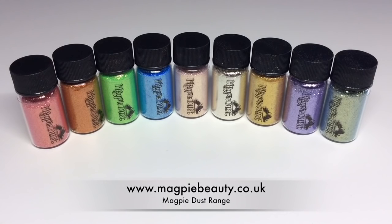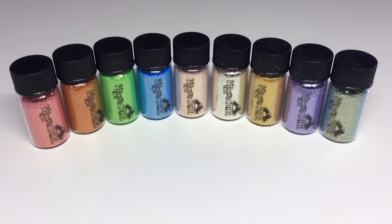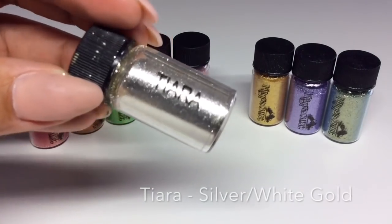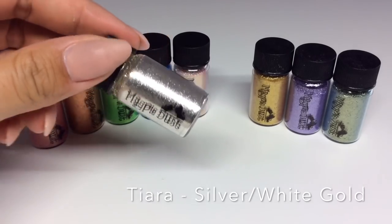Hey guys, welcome back to another video. Today I'm going to be doing some embossed metallic nails using the magpie dust range. I'm actually going to be using in particular tiara, which is a gorgeous silver white gold dust.